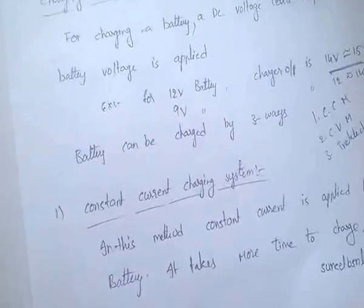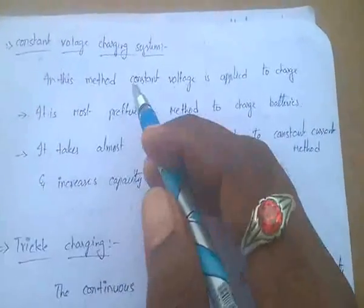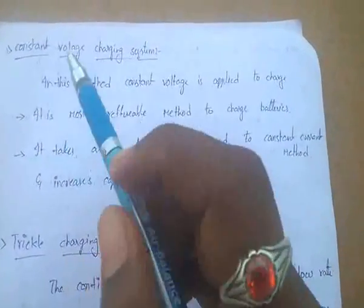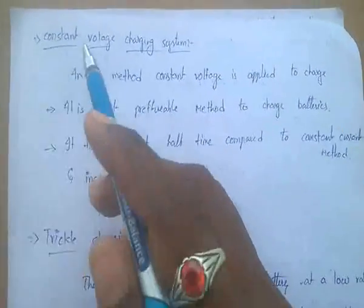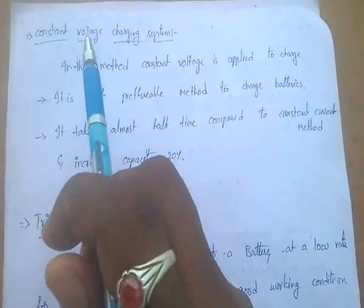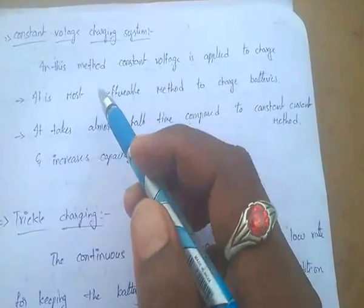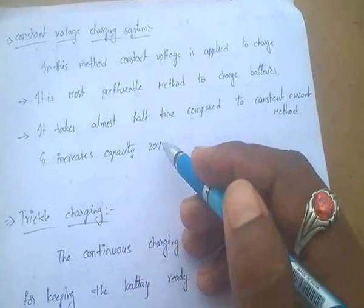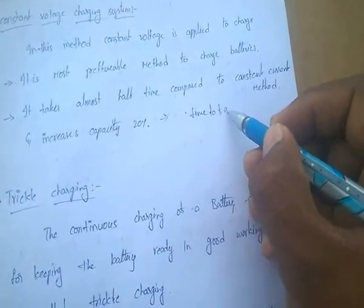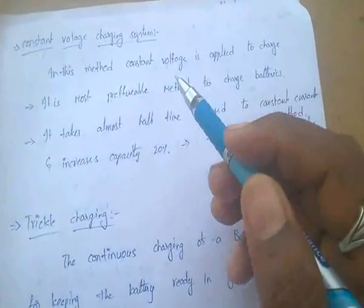The next method is constant voltage charging. In this method, a constant voltage is applied to charge the battery. This is the main preferable and most important method to charge batteries, and it takes almost half the time compared to the constant current charging method.